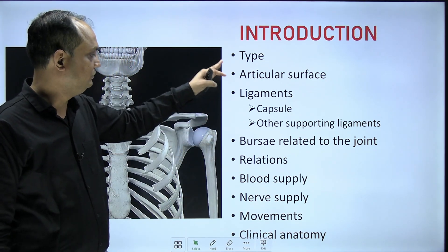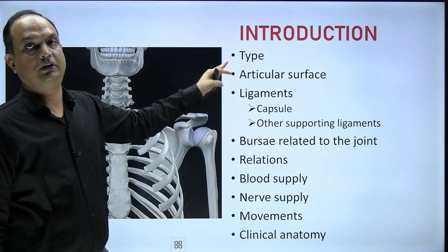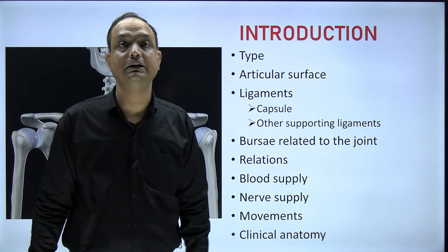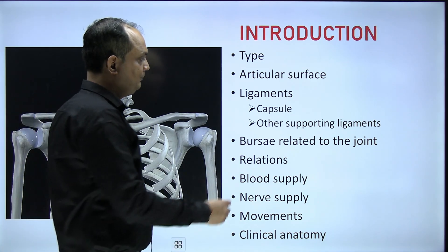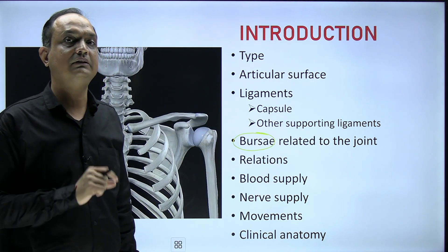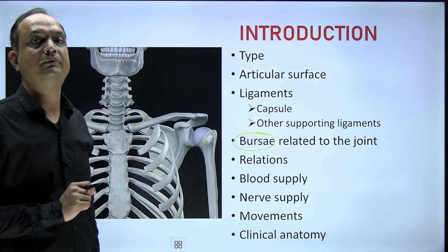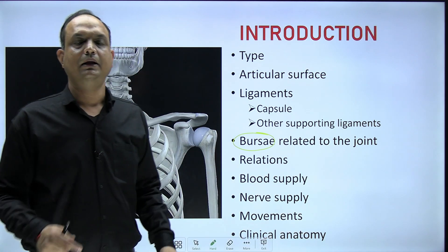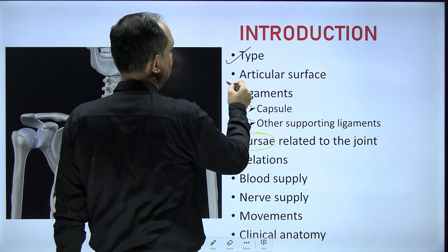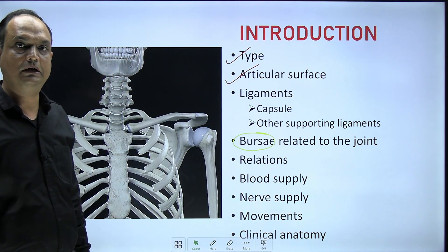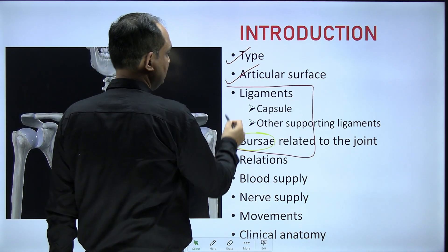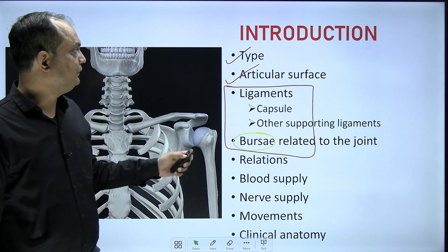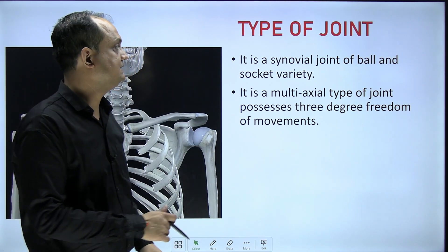When studying the shoulder joint, you should write it under these subheadings: type of joint, articular surfaces, ligaments (mainly the capsule and supporting ligaments), bursae — which are sponge-like synovial membrane structures containing synovial fluid to prevent friction — then relations, blood supply, nerve supply, movements, and clinical anatomy. In this video we cover type and articular surfaces; the second video covers ligaments and bursae; the third covers the remaining topics.